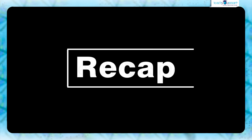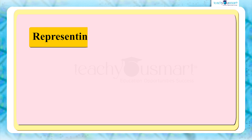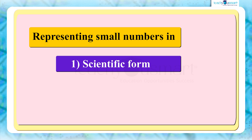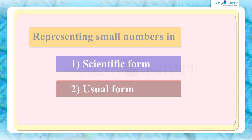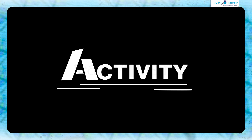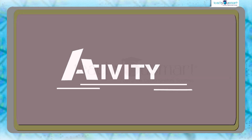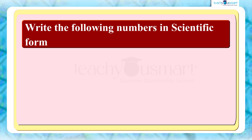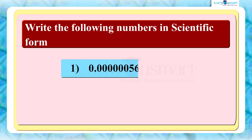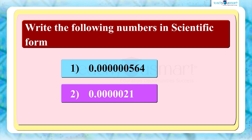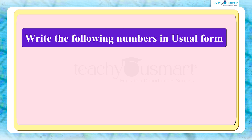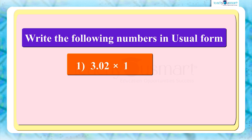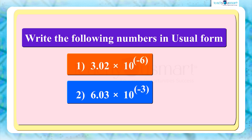Let's recall what we discussed today: representing small numbers in scientific form and in the usual form. Before winding up, let's check how much you understood by doing an activity. Write the following numbers in scientific form: first, 0.000000564; second, 0.00000021. And write the following numbers in usual form: first, 3.02 multiplied by 10 raised to minus 6; second, 6.03 multiplied by 10 raised to minus 3.